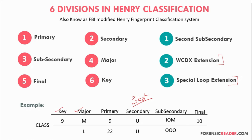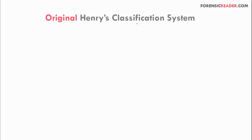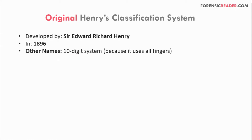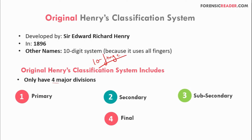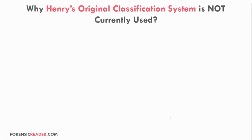The original Henry classification system was developed by Sir Edward Richard Henry in 1896. It is also called the 10-digit system because it uses all 10 fingers. The original system had only four major divisions: primary, secondary, sub-secondary, and final. The remaining two divisions and three extensions were added by the FBI to ease classification and simplify the search process.